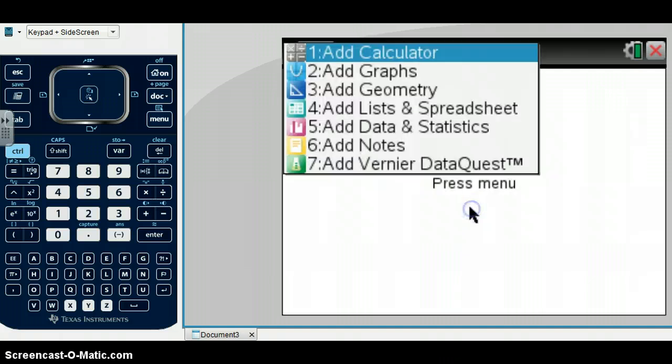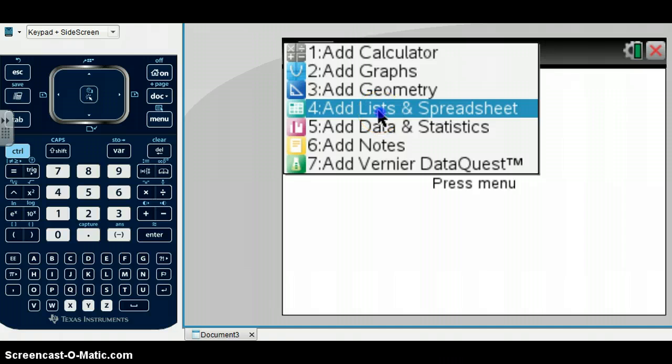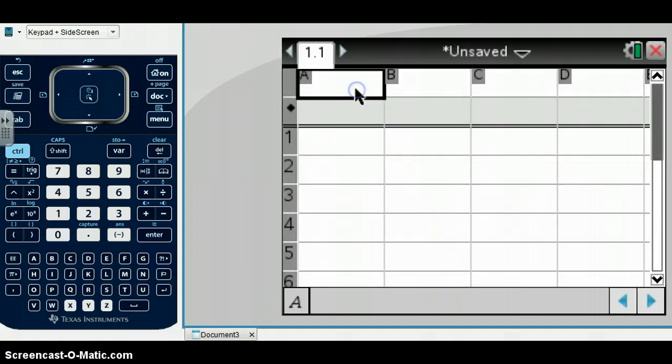We don't care about saving an unsaved document, so we'll click no. Now we're going to add a list and spreadsheet page. Each column we want to put down what the variable is. So our first variable is day,